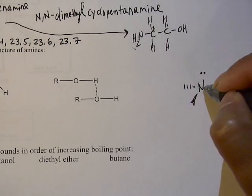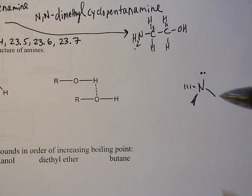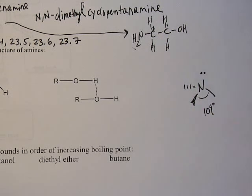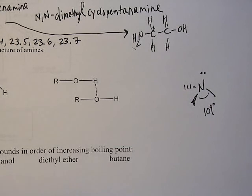All right. So because it's SP3 hybridized, the angle about them is about 109 degrees, just like very close to the tetrahedral carbon.